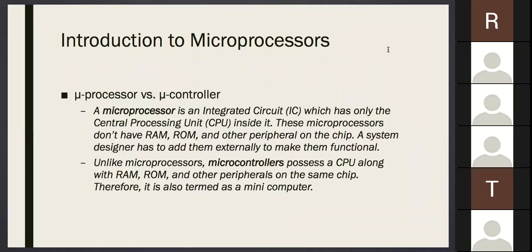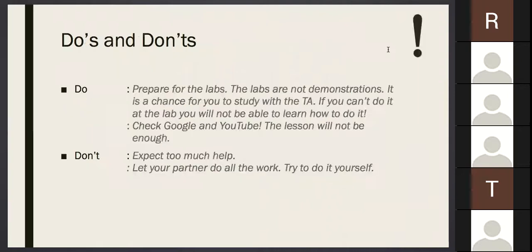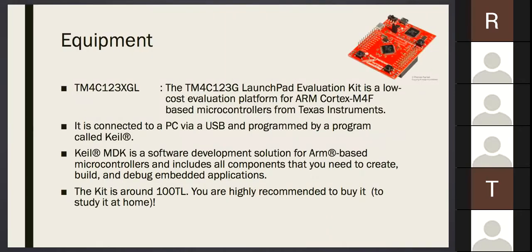And it doesn't have other peripherals on the chip. What is a peripheral? Peripheral means in English, interface. So you cannot interact with the CPU. If you have a microprocessor only, which is only this black thing, you need to, as a designer, create an environment like this card to use this microprocessor.